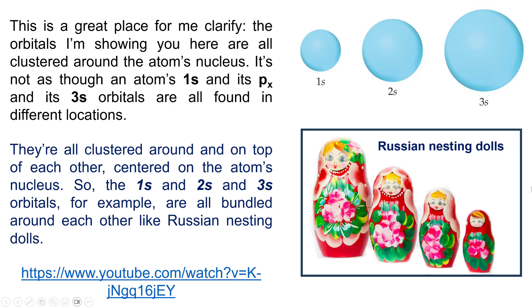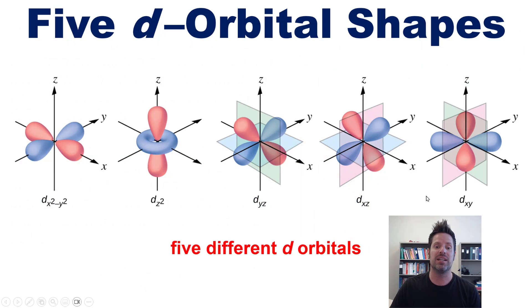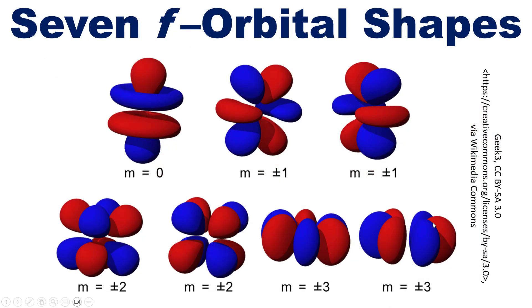So what are the other orbitals? Well, as it turns out, there are five different d orbital shapes, all depicted artistically right here, and there are seven different f orbital shapes depicted right here.